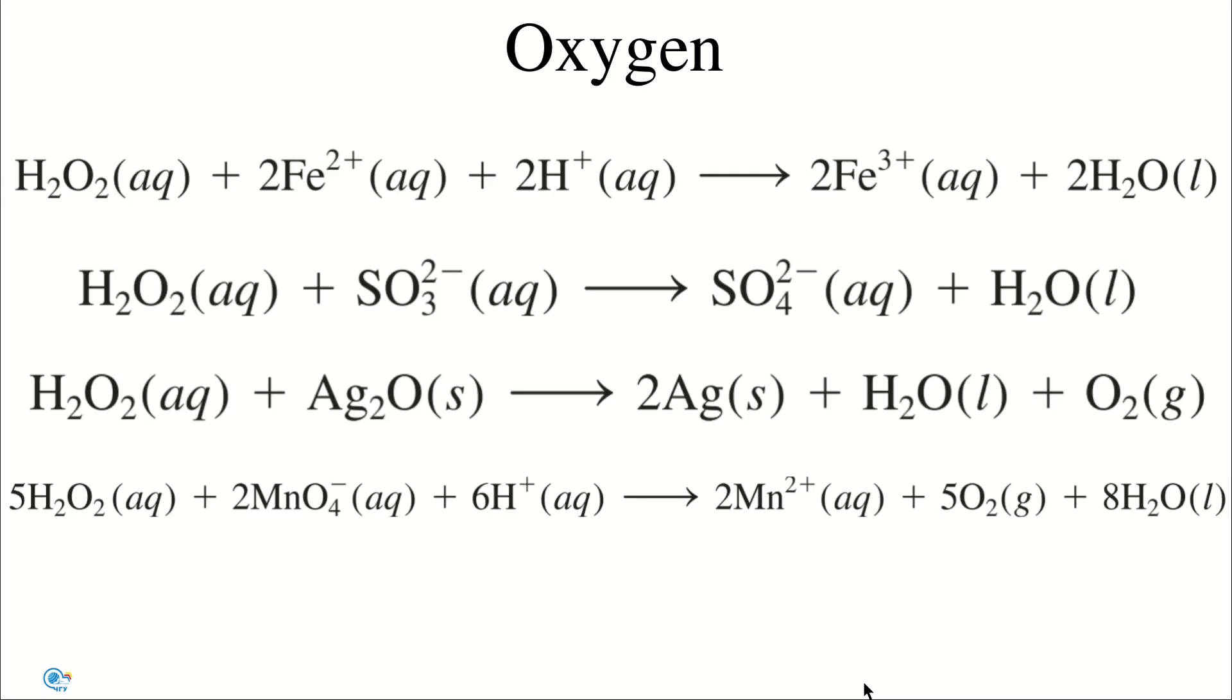We should take note of the fact that both the peroxide ion and the superoxide ion are byproducts of metabolism. Because these ions are highly reactive, they can inflict great damage on living cells. Fortunately, our bodies are equipped with the enzymes catalase, peroxidase, and superoxide dismutase, which convert these toxic substances to water and molecular oxygen.